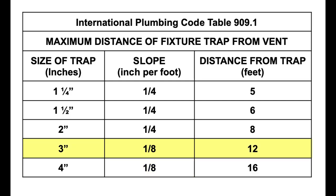A three-inch pipe has a maximum trap arm distance of 12 feet, and a four-inch pipe has a maximum trap arm distance of 16 feet — measured from the vent to where the trap is. These are the maximum distances according to the International Plumbing Code.